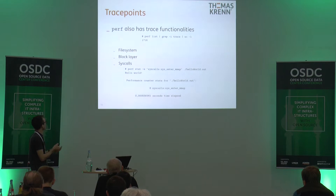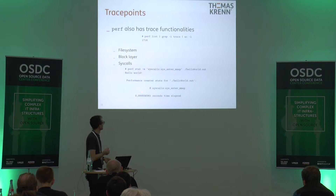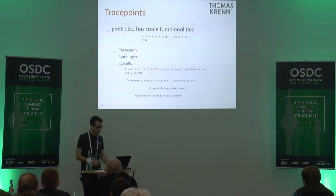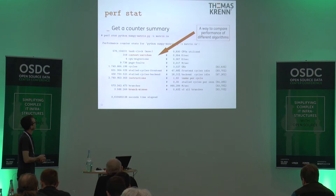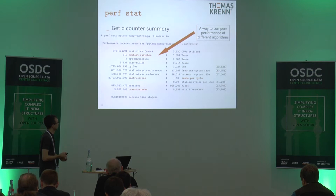Perf also has a trace functionality with possibilities for tracing file system, block layer, and syscall events. You can watch how many syscalls are being executed and use this data. You can get a counter summary when executing commands — showing how many context switches, how many instructions, and how many instructions per cycle. That last number is one we will cover again later when discussing CPU details.